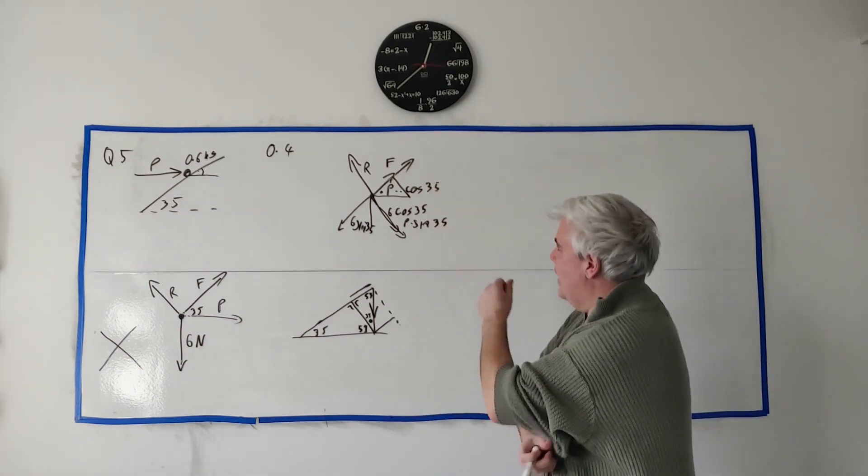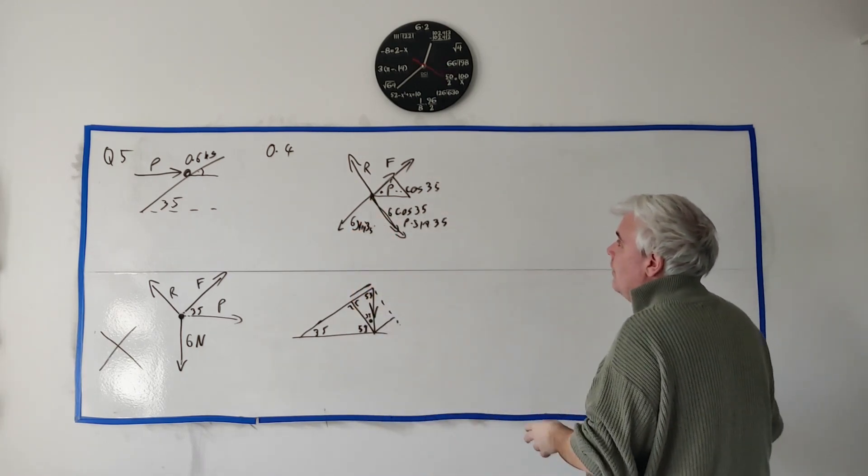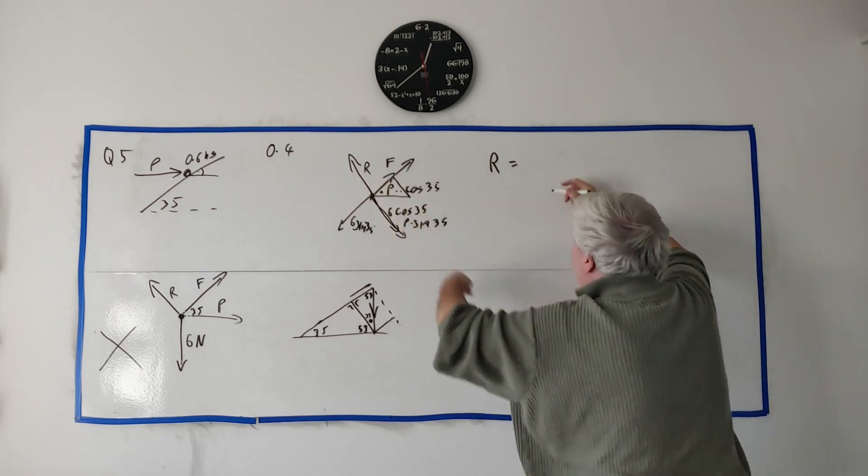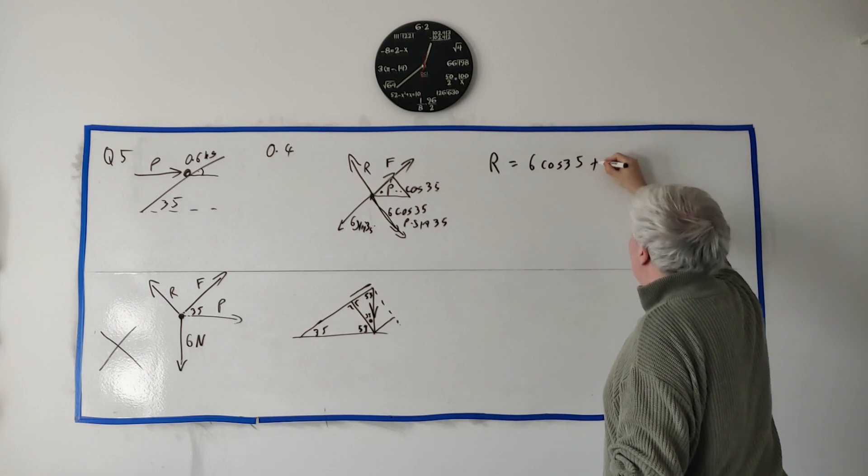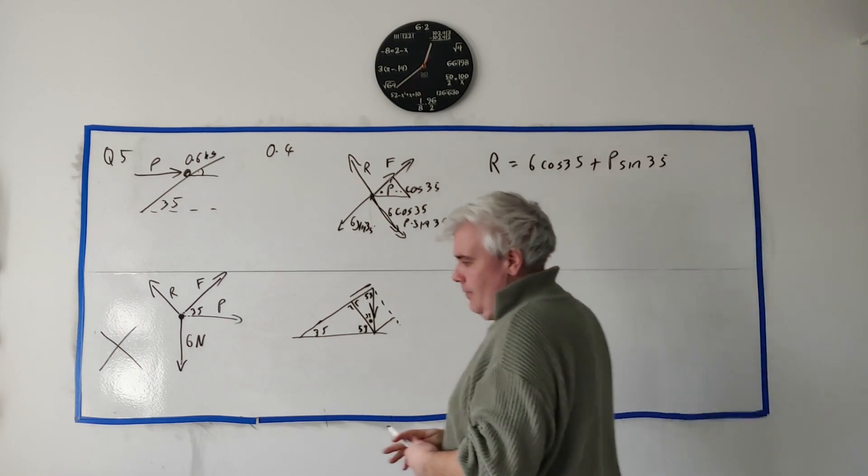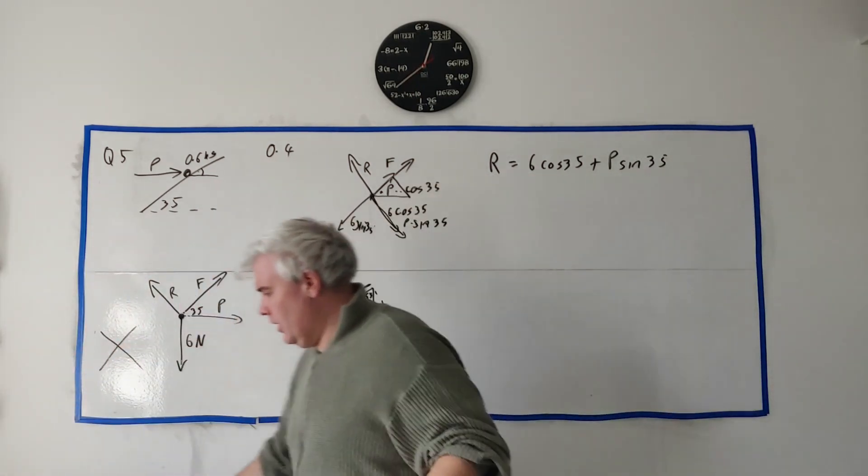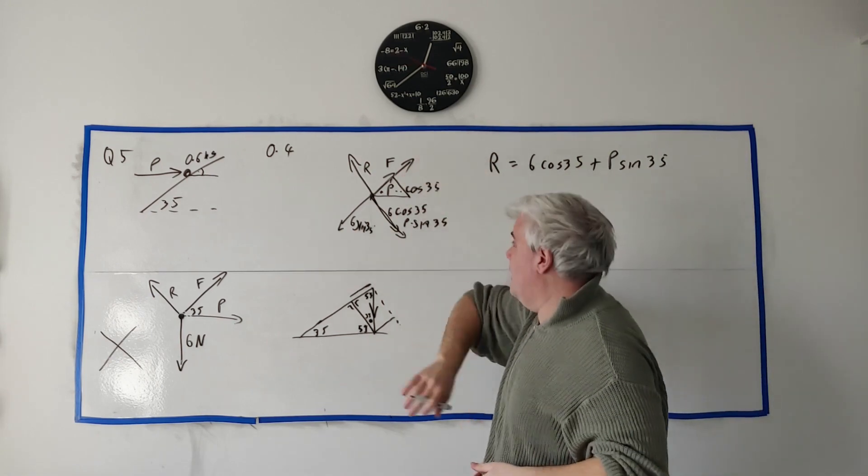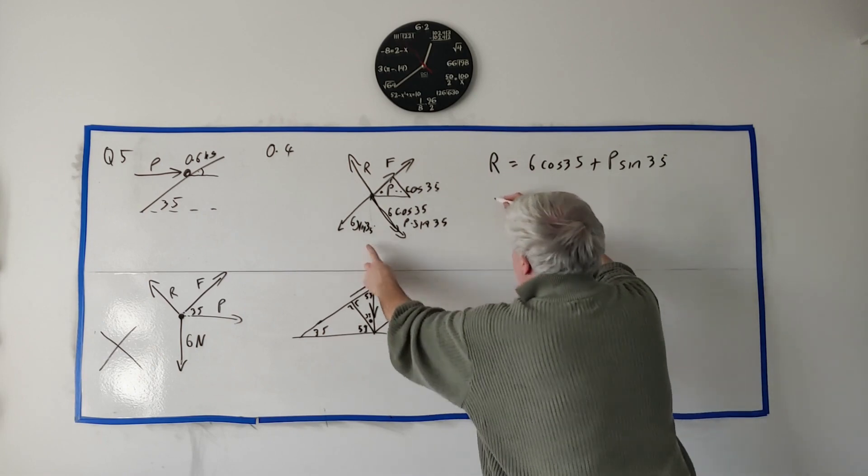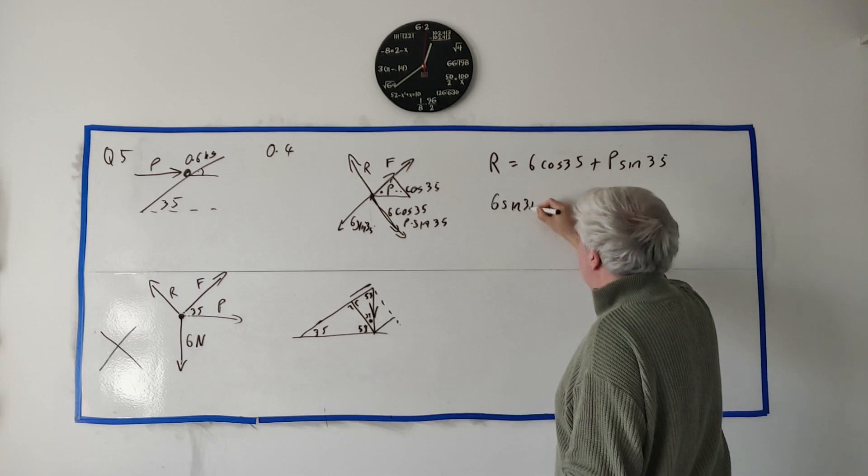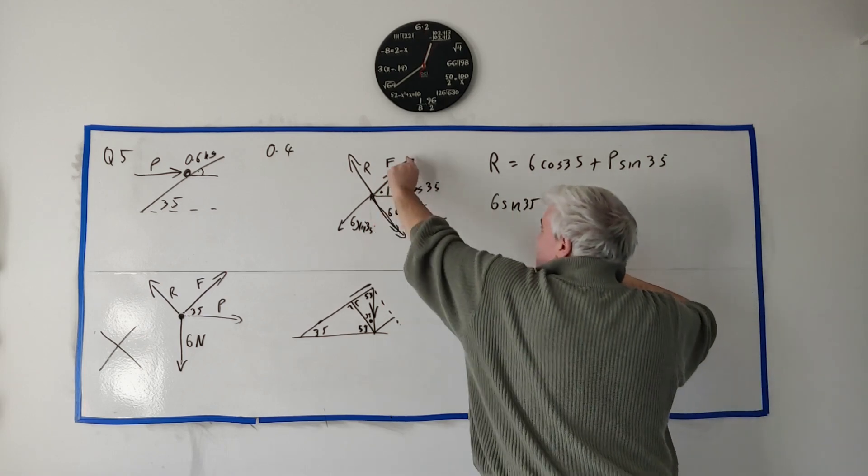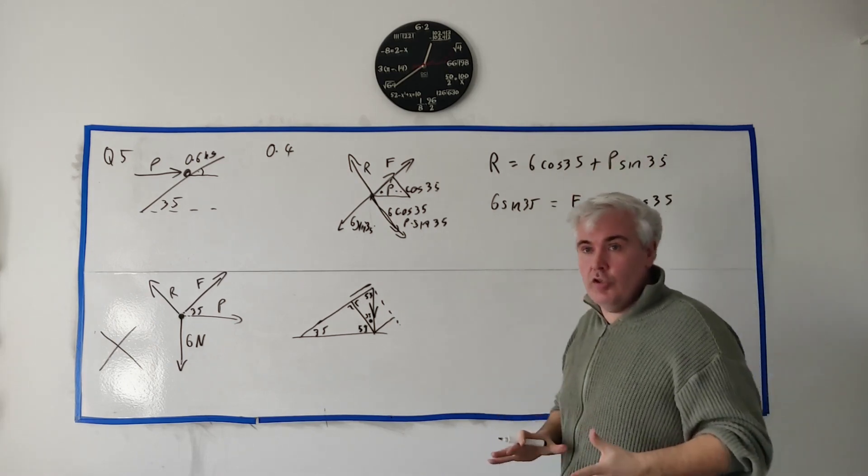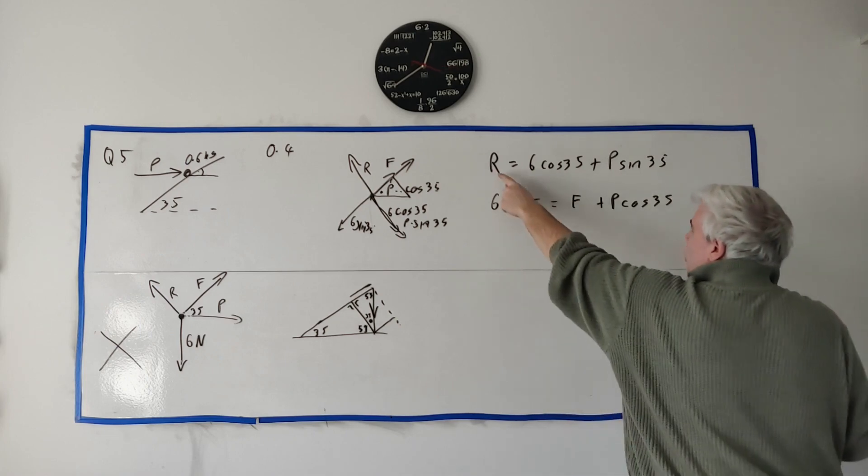Let's jump onto the maths. The forces in this direction must equal everything in this direction, so that's R equals 6 cosine 35 plus P sine 35. In the other direction, 6 sine 35 equals all the forces this way, so F plus P cosine 35. These are the two directions we can equate to solve everything. We have R, P, and F, three unknowns, so we need one more thing. We need to remember F equals the coefficient 0.4 times R.